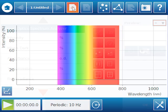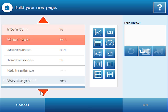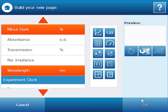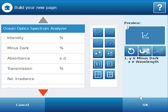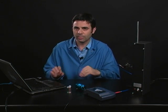I'm going to build another graph of minus dark versus wavelength. And we'll make another graph. And it looks pretty identical to the first graph, but there is one slight difference. The minus dark compensates for room light.